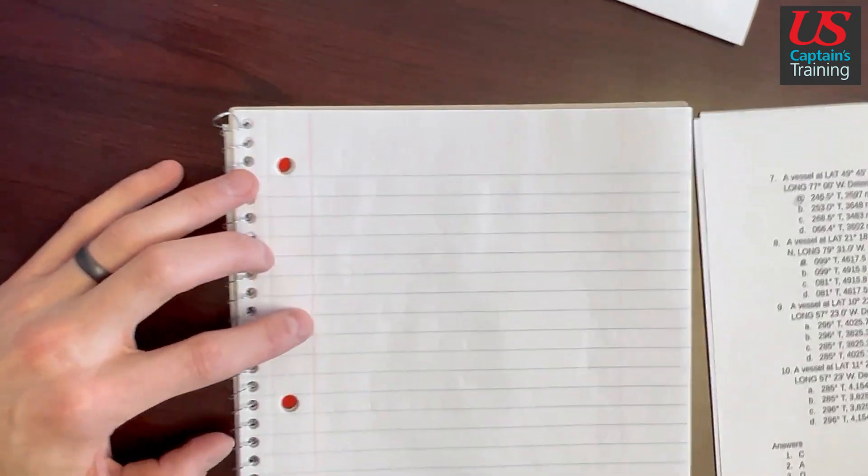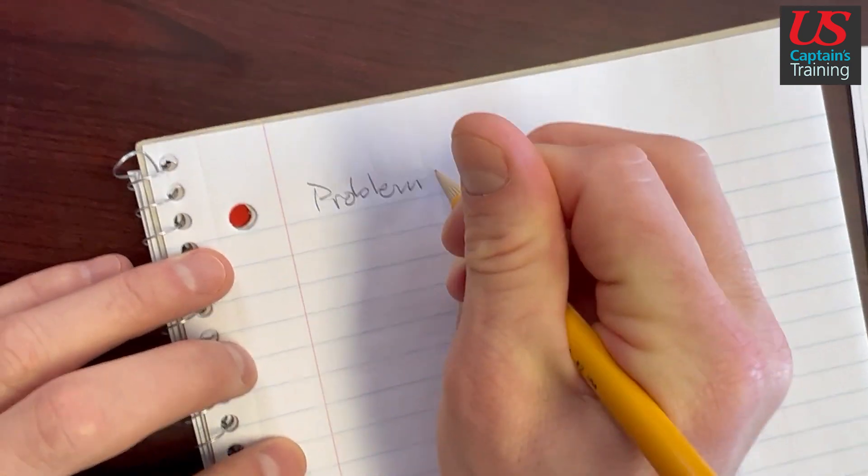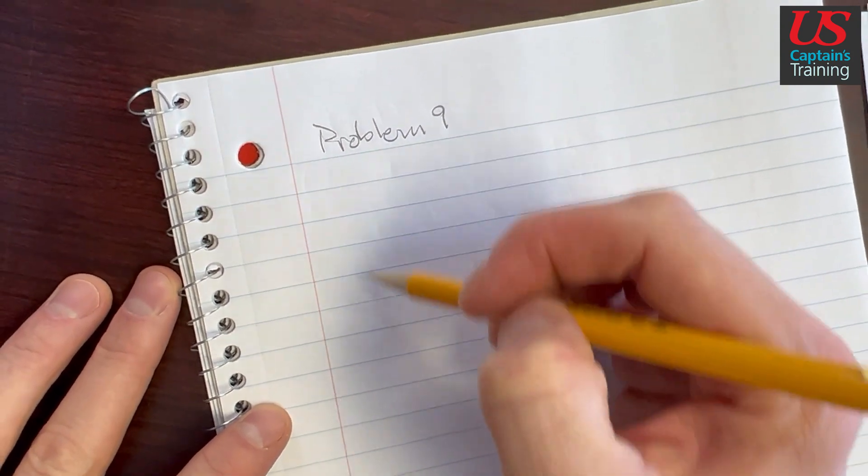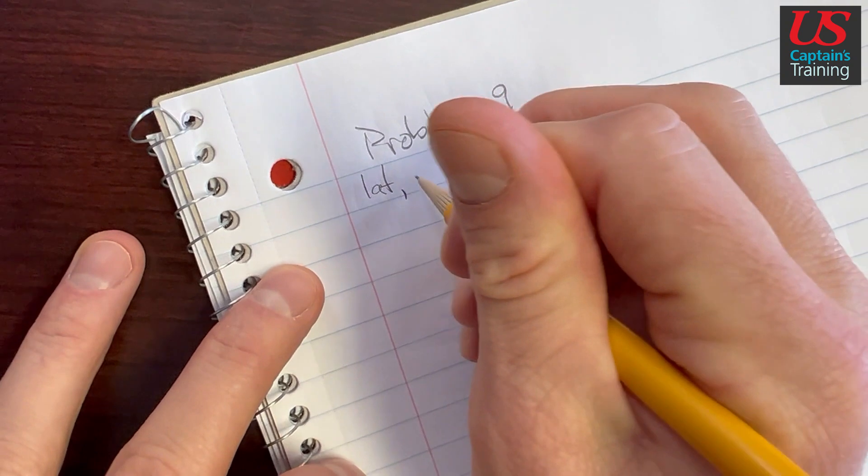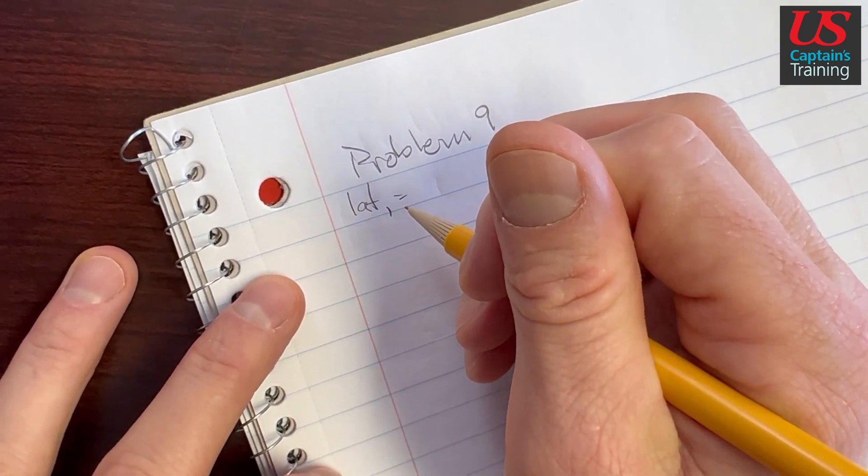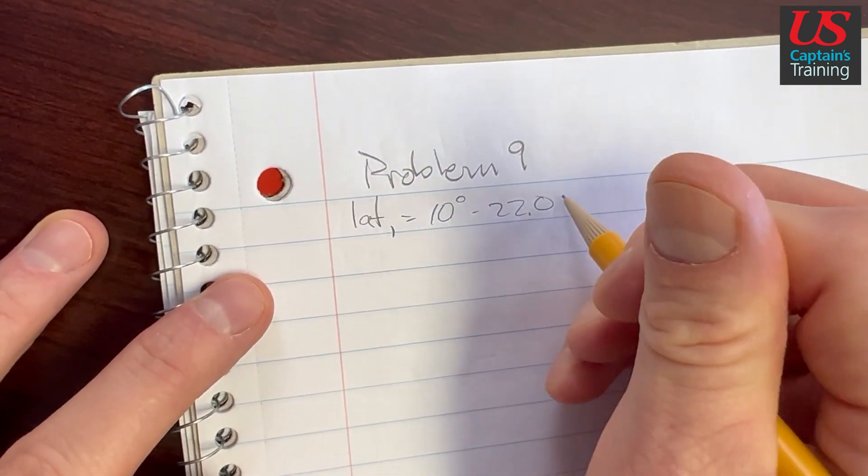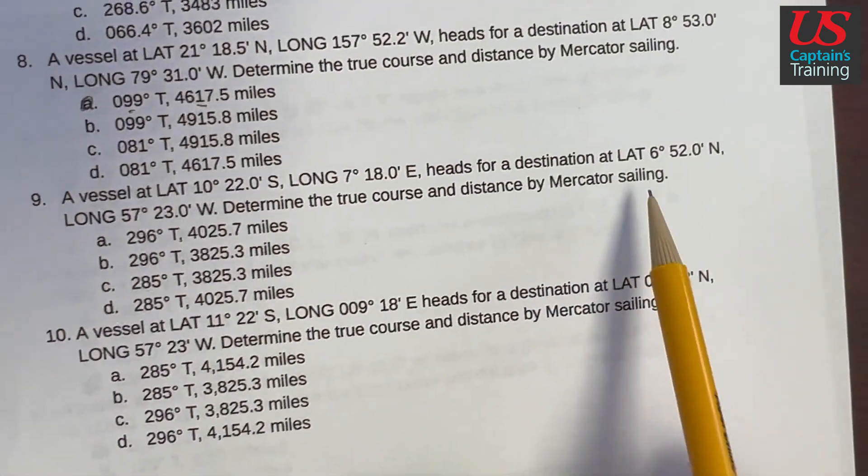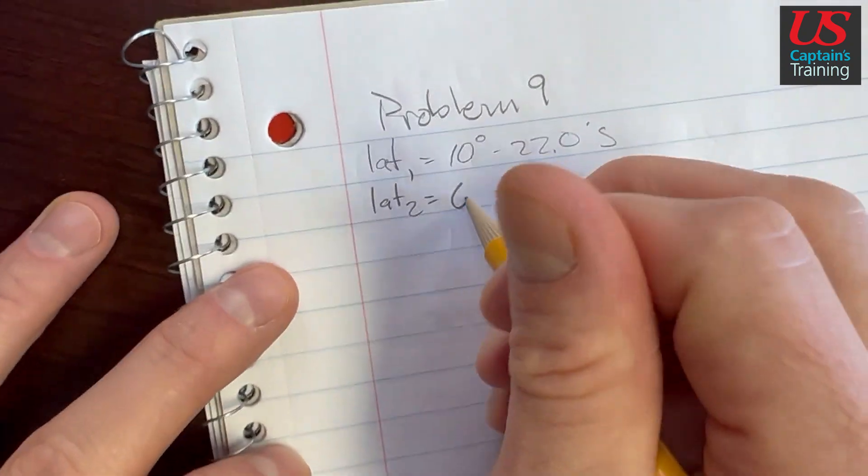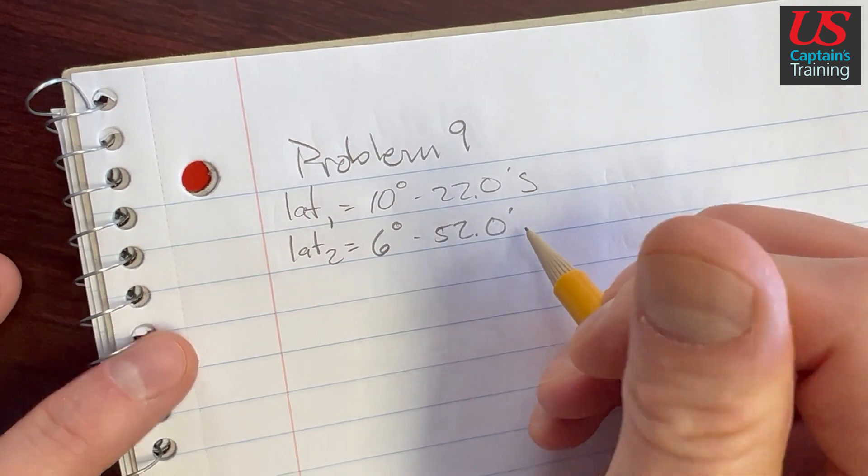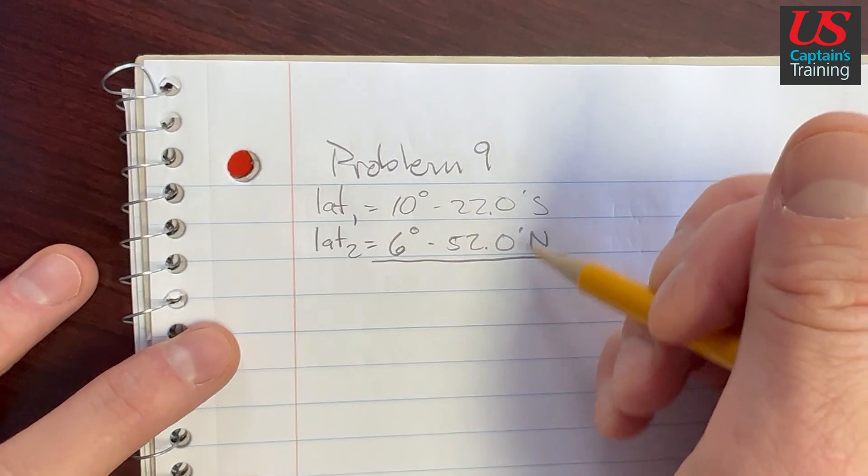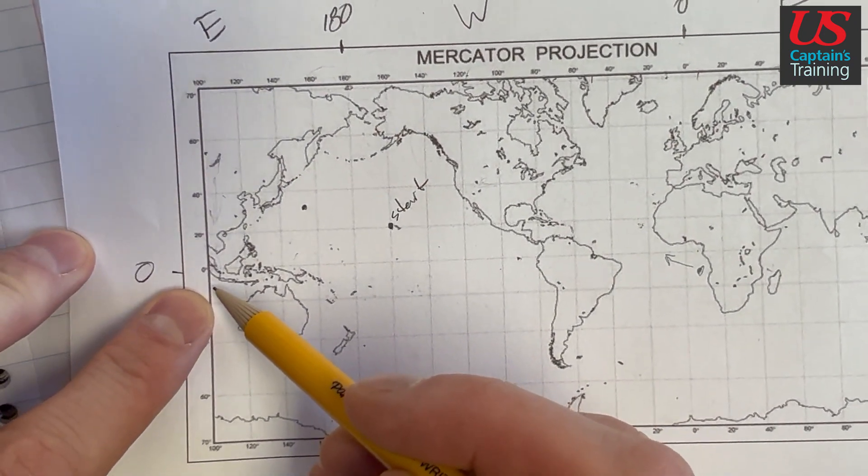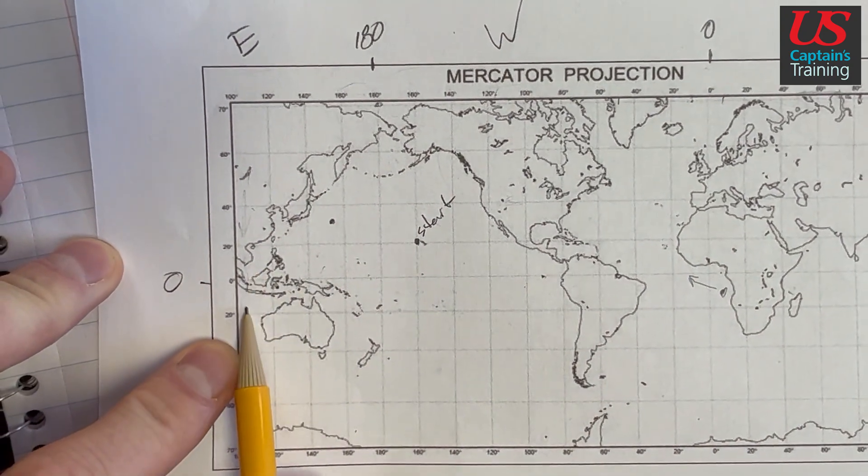We're on Problem 9, and we need to figure out little l first, which is the difference north and south that we traveled. So let's do that. We'll take latitude 1, record that as 10 degrees 22.0 minutes south. And then latitude 2 equals 6 degrees 52.0 minutes north. We need to figure out where we went here and what the difference is. So we started at south, down 10 degrees south, and we went up to 6 degrees north. We passed the equator and went north.